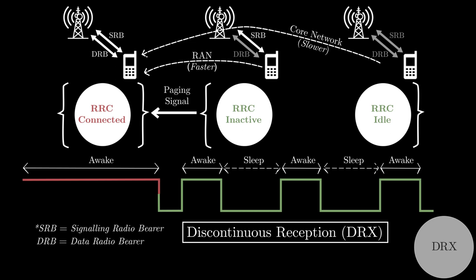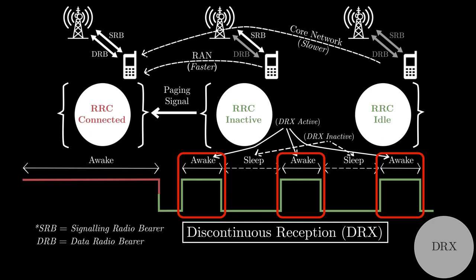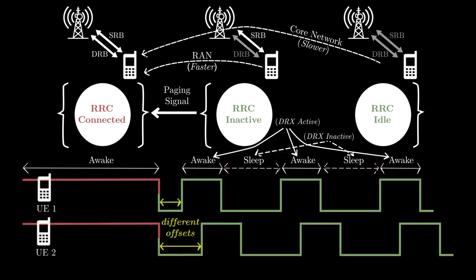These wake up and sleep states are also called DRX active and DRX inactive states respectively. Base station and UE must be synchronized to ensure that the base station sends paging signal only when UE is awake. Different UEs will have different offsets for the wake up and sleep cycles, so that base station gets enough resources to allocate paging signal for all UEs. These offsets and DRX cycle durations are determined by core network and conveyed to UE using a special parameter inside the RRC configuration.